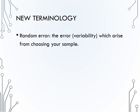There are two primary vocabulary terms to get out of the beginning of section 3.5. The first is random error, which is defined as the error or variability which arises from choosing your sample. The term error here is a misnomer. In science, error has historically been used to represent variability, not wrongdoing.